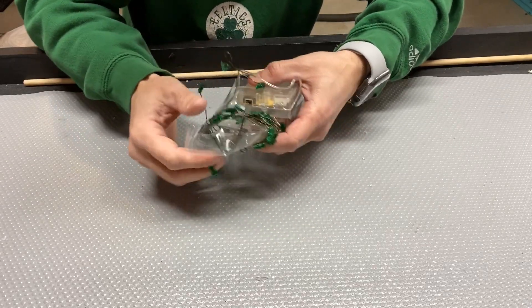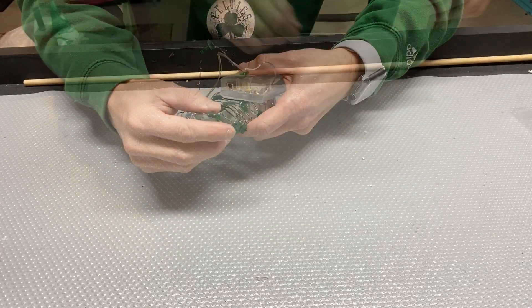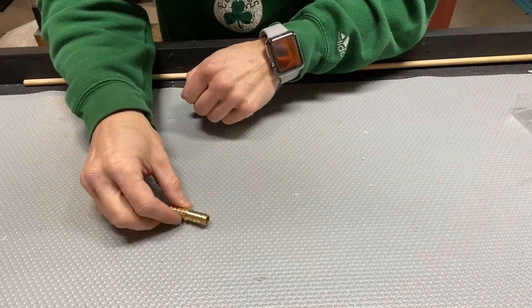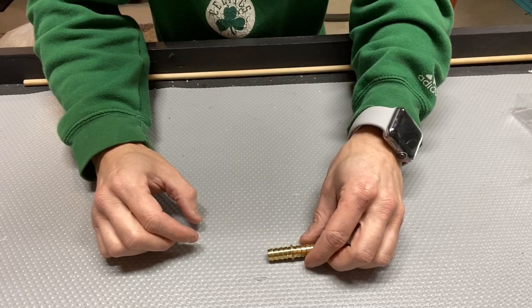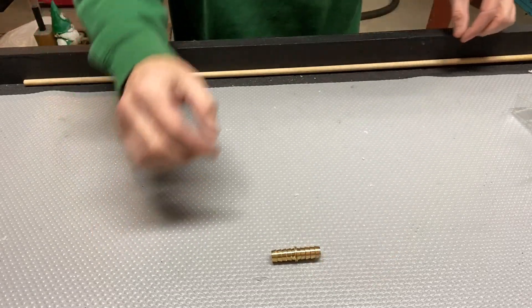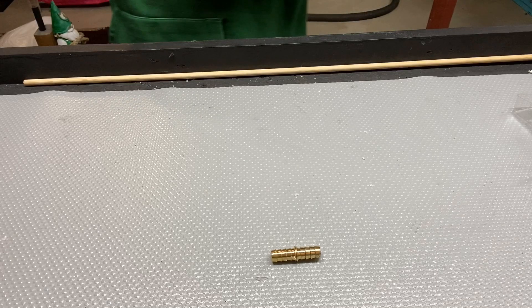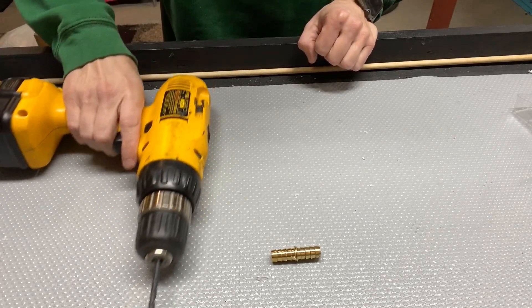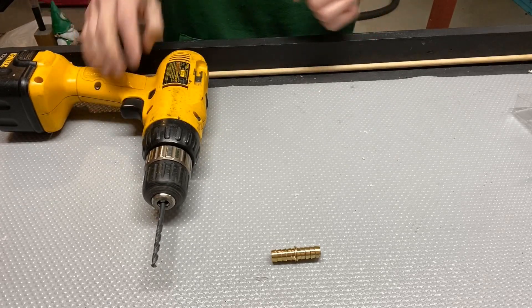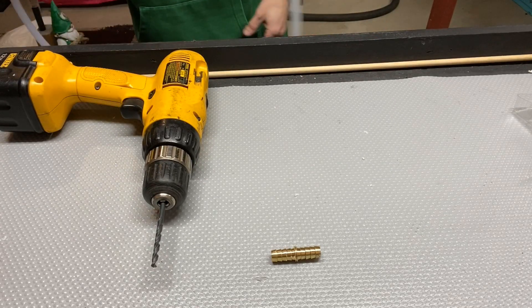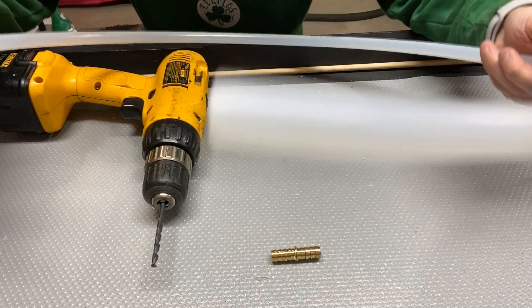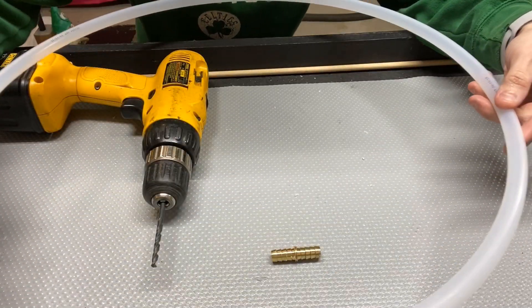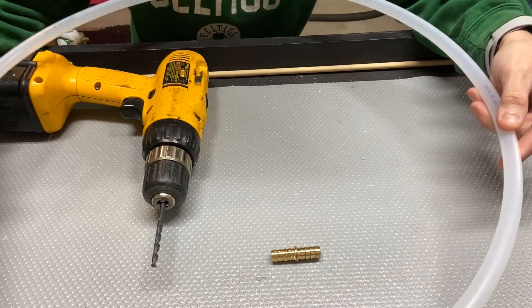First, you will need a 3/8 coupling, a 3/16 drill bit with a drill, and I picked up the tubing from Home Depot. It's a 3/8 tube, it's a clear tube.